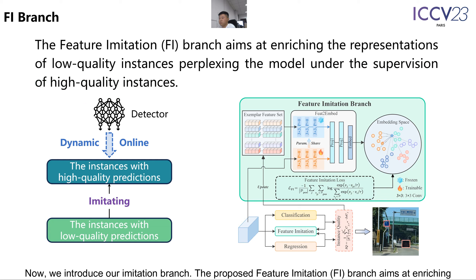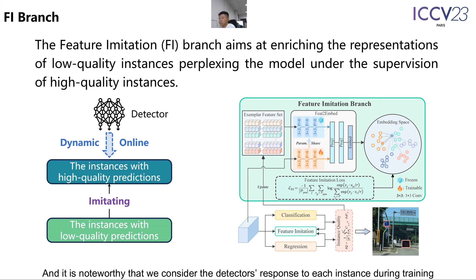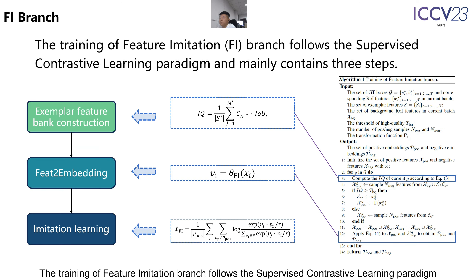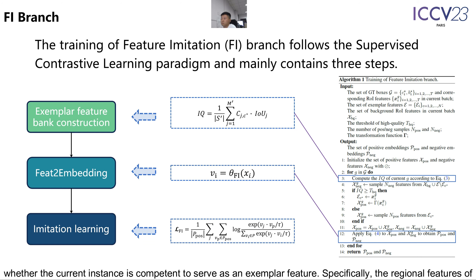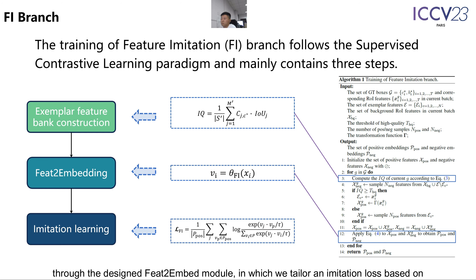Now we introduce our imitation branch. The proposed feature imitation (FI) branch aims at enriching the representations of low-quality instances by supervising them with high-quality instances. Notably, we consider the detector's response to each instance during training to perform the imitation, instead of simply taking their sizes into consideration. The training follows the supervised contrastive learning paradigm and contains three steps: first, we introduce instance quality to assess whether an instance is competent to serve as an exemplar feature; then we project exemplar and regional features in the current batch to the embedding space through the designed feat-to-embed module, where we apply an imitation loss based on supervised contrastive learning.